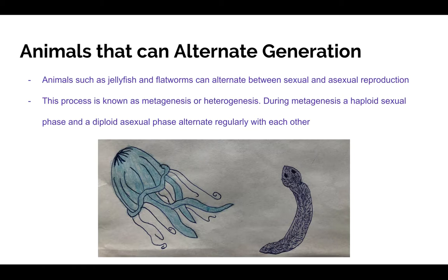Certain animals, such as jellyfish and flatworms, can alternate between sexual and asexual reproduction. This process is known as metagenesis, or heterogenesis. During metagenesis, a haploid sexual phase and a diploid asexual phase alternate regularly.